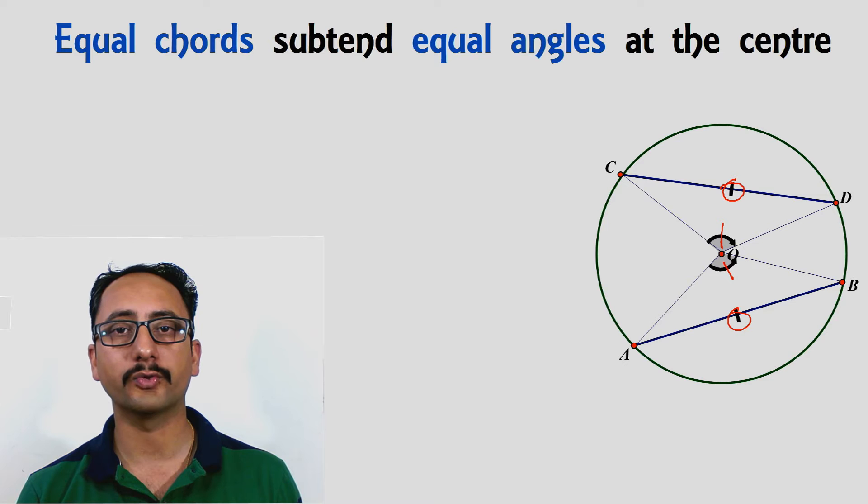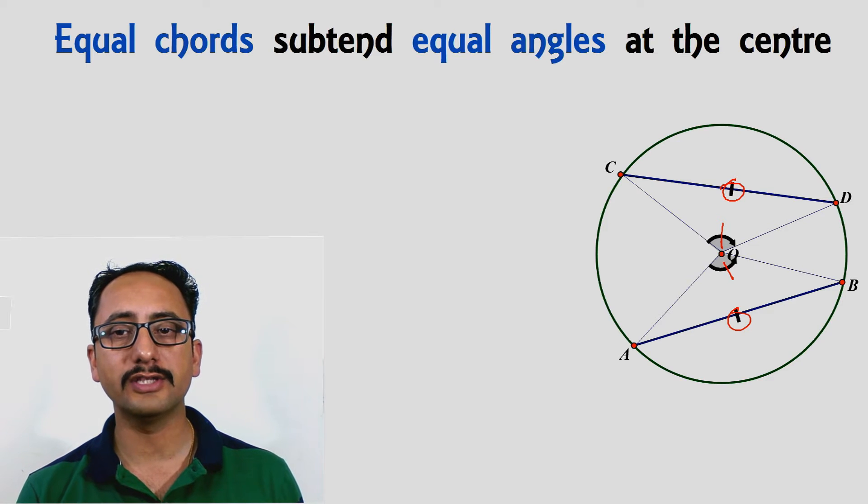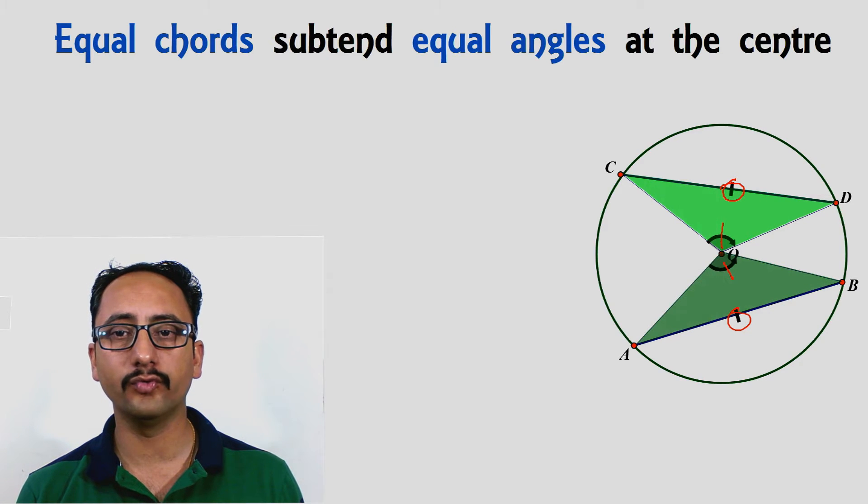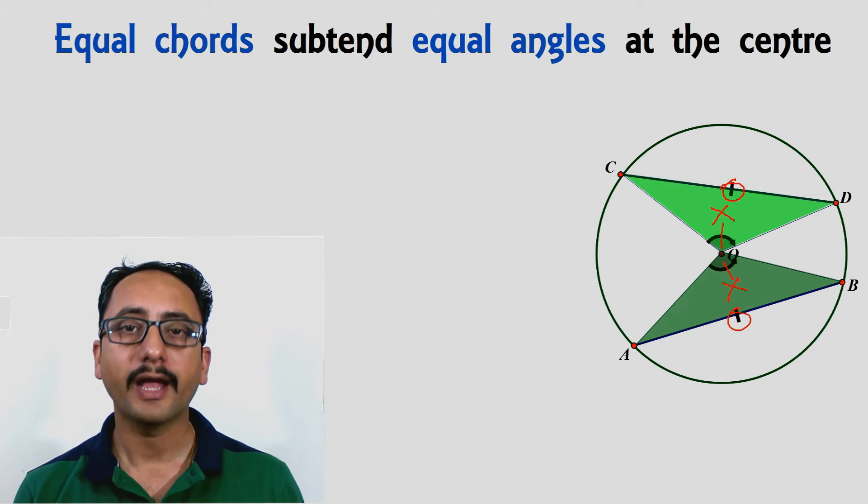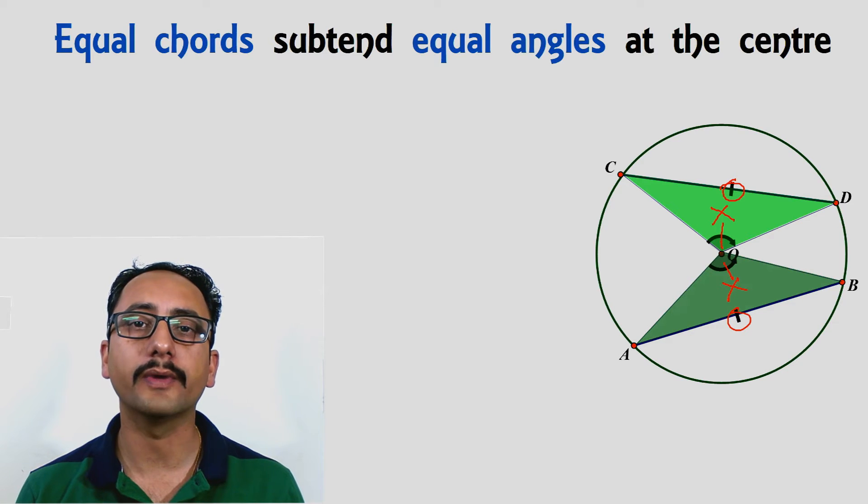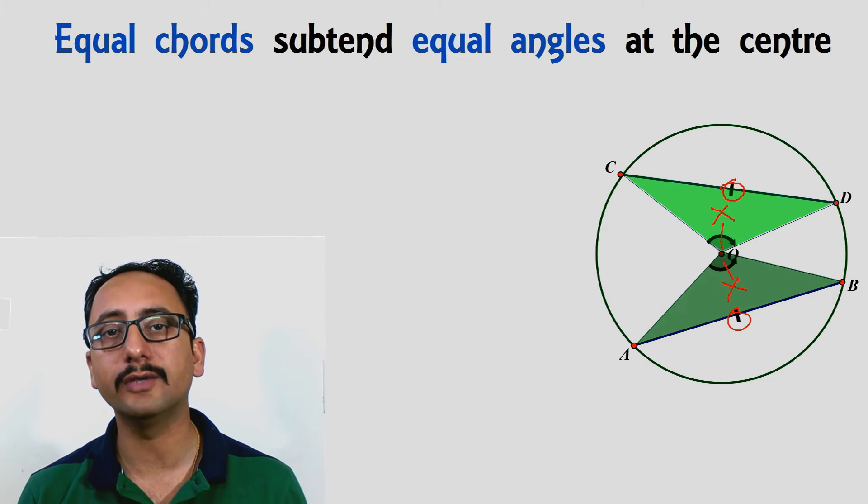Now, the next question is how are we going to prove this theorem. We will be taking these two triangles and we will prove that triangle AOB is congruent to triangle COD. If these two triangles are congruent, then the corresponding parts of these triangles have to be equal, so we can say that the angles are equal.